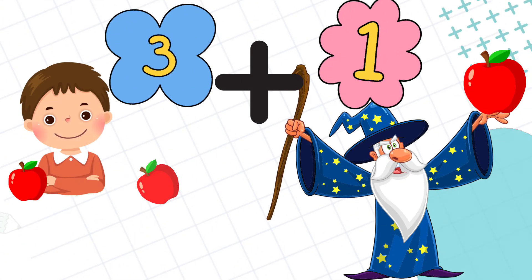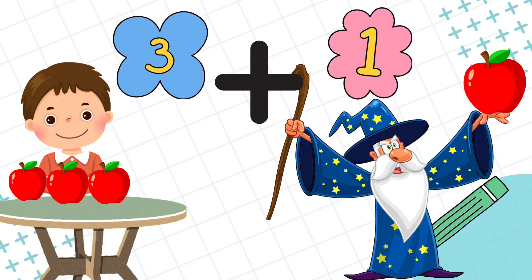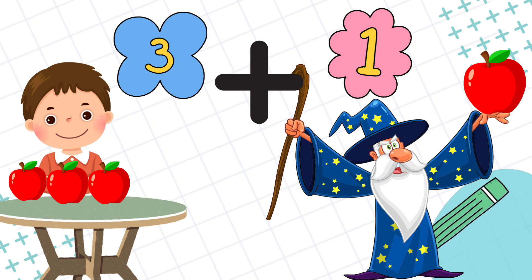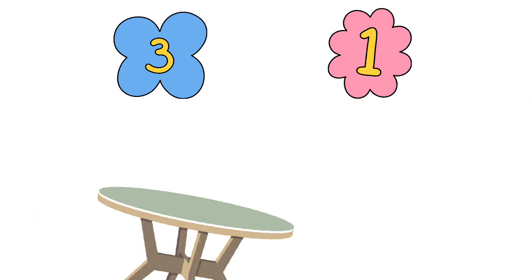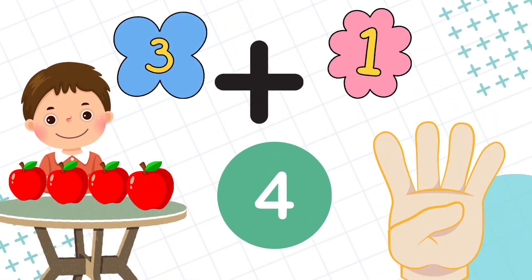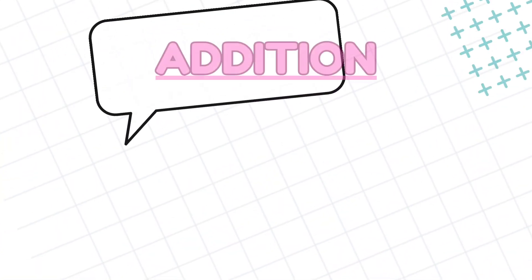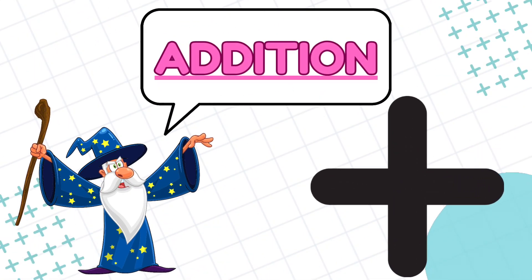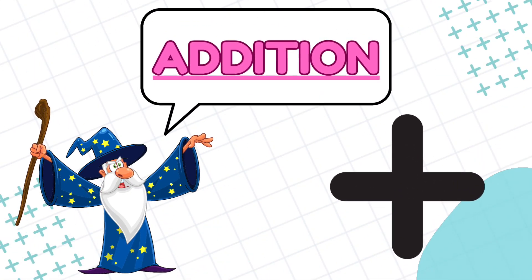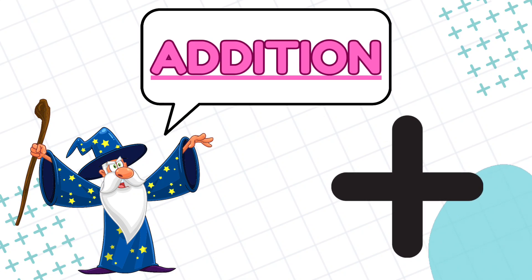First, let's learn about addition. Addition is all about putting things together. Let's start. Tommy has three apples. If I give one more apple to him, how many apples does he have now? Yes, three plus one equals four. This plus sign is called addition.